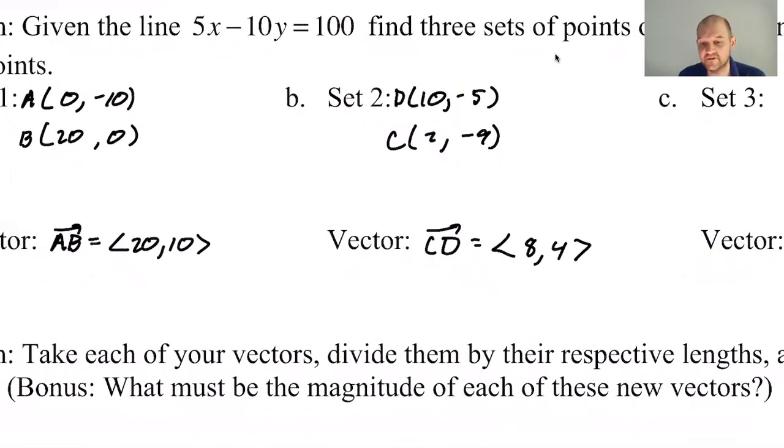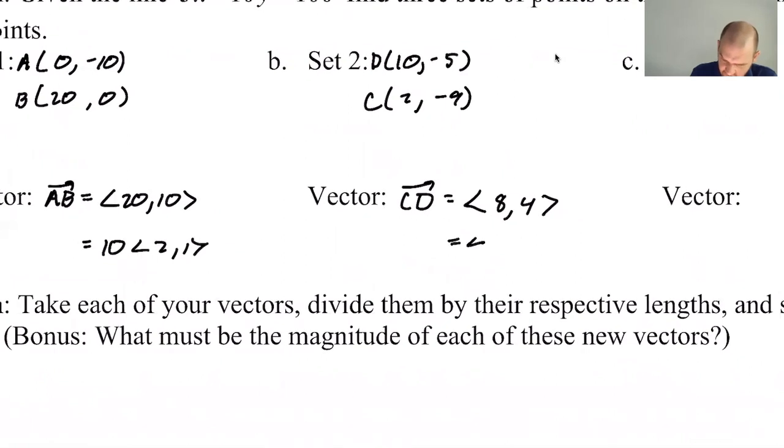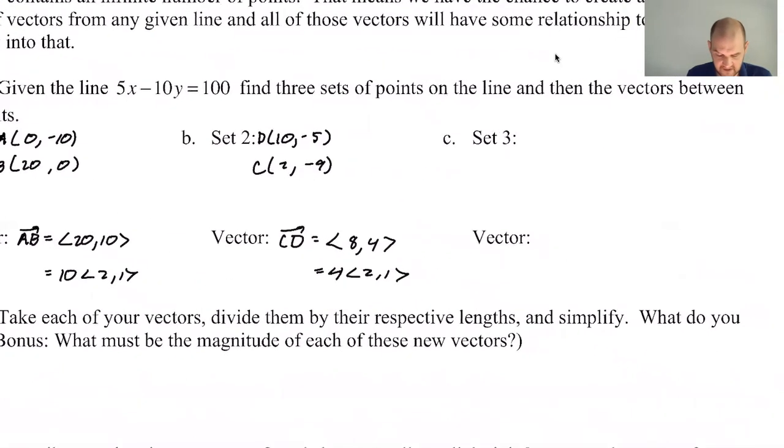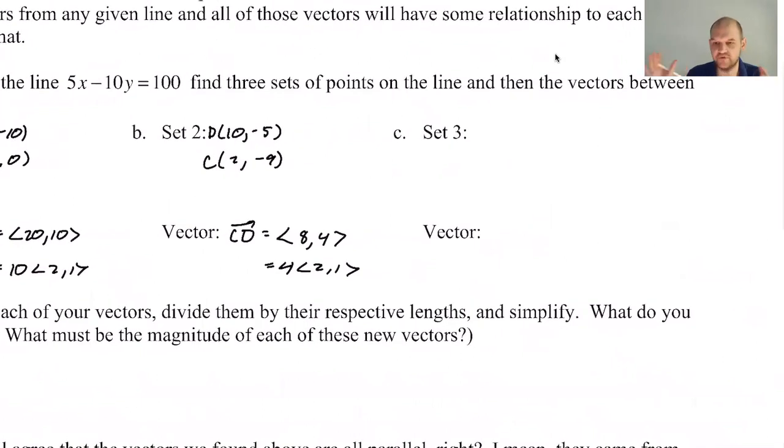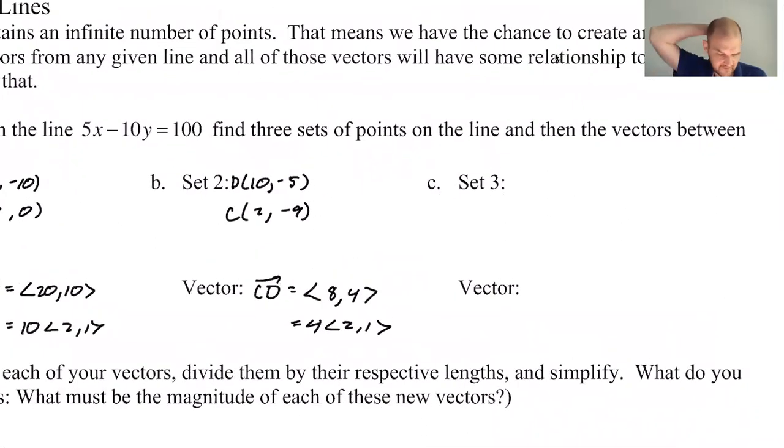Now already, if I look at the two vectors that I found, I notice something. This vector is like 10 times <2,1>, and this vector is 4 times <2,1>. So those are scalar multiples of the same vector, which is interesting. <2,1> is like this proto vector that's kind of in there.